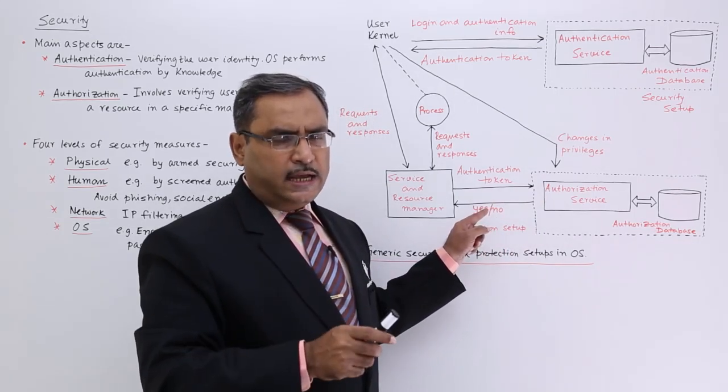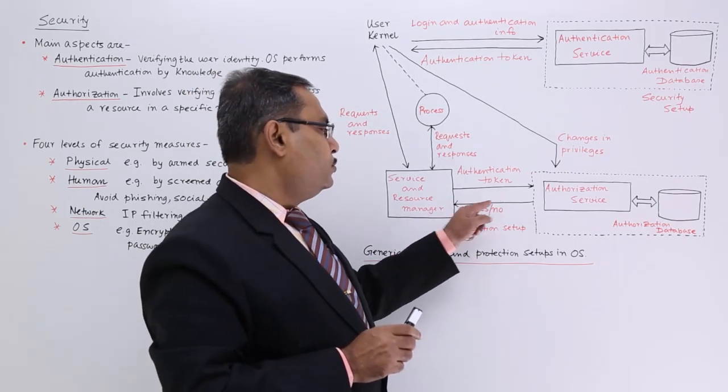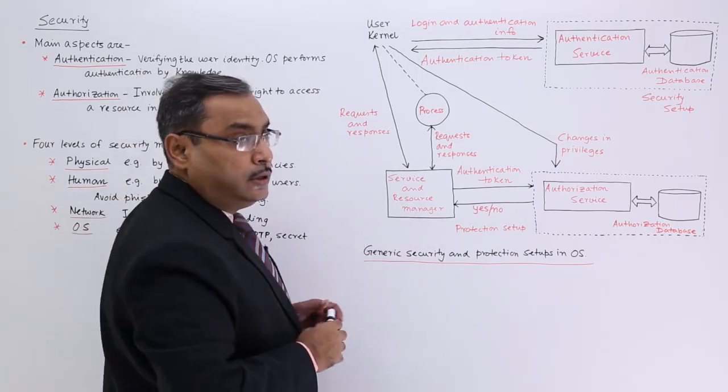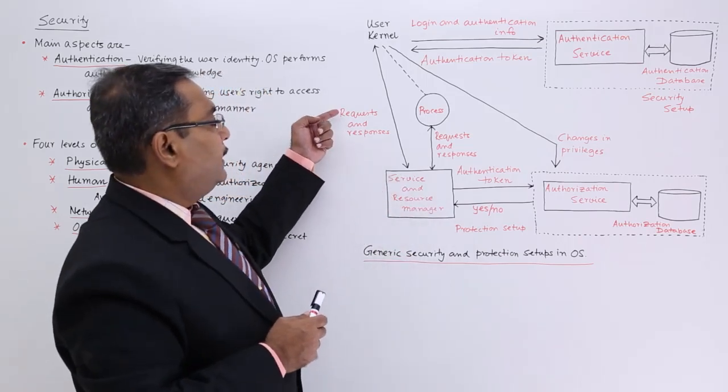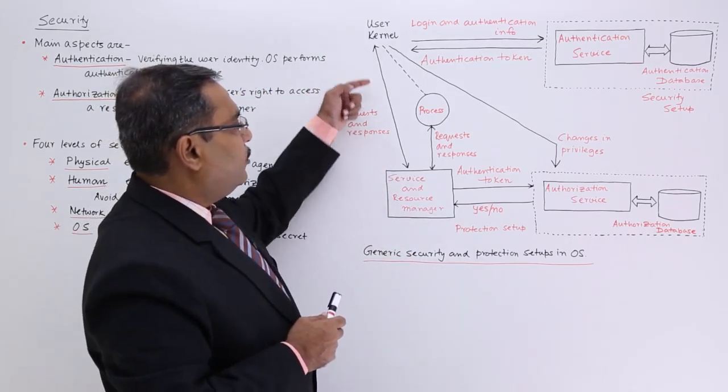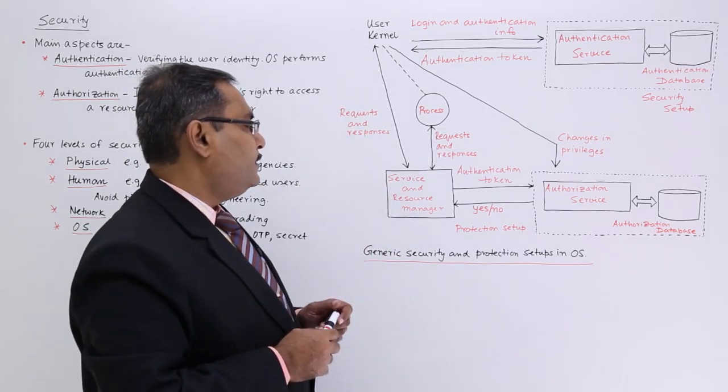yes, he or she is allowed, yes, the user is not allowed. So in this way, yes or no will be coming from this and service and resource manager will take this particular yes or no as input and do the needful accordingly. And these are the requests and responses, requests and responses that will be communicating in between this user kernel and this service and resource manager.